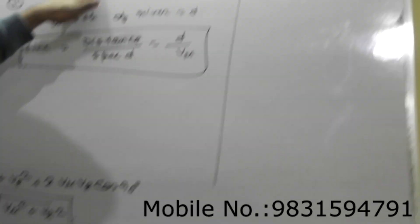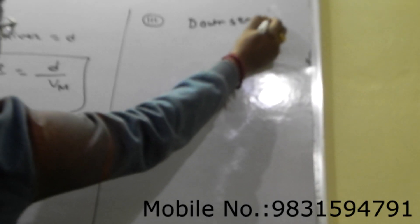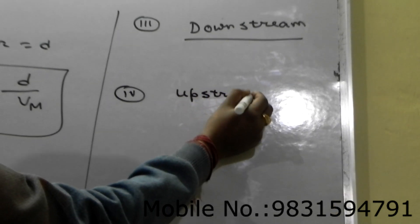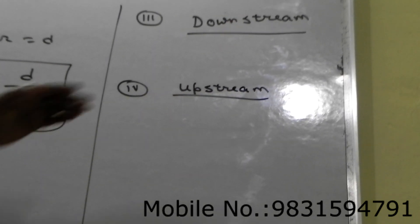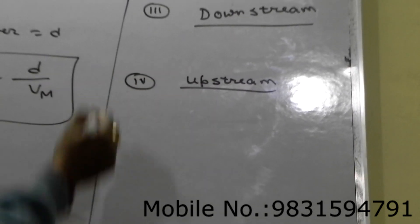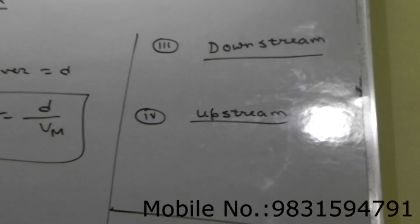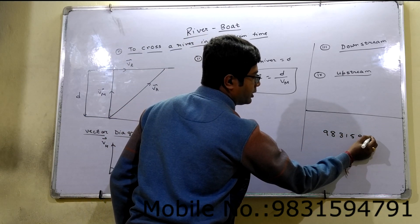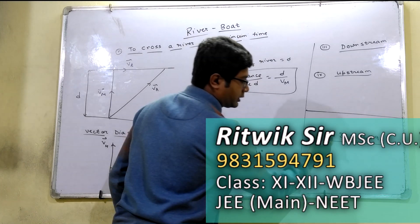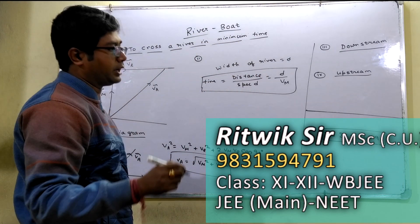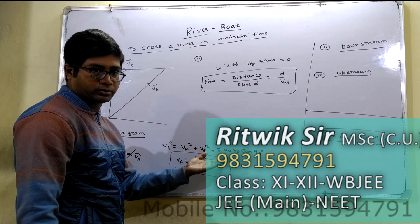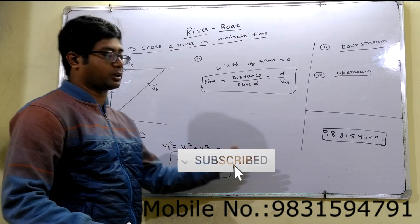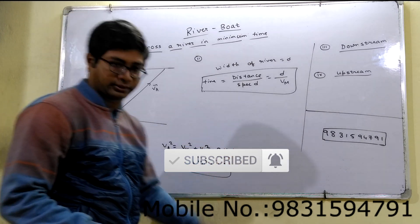And there are third and fourth cases: to cross the river being downstream and upstream. Downstream is along the stream, and upstream is opposite to stream. This will be discussed in class. Please follow my classes. My number is 9831-594-791. And there are three branches: Tollygunge, Keshtopur and Shyambazar. Please, if you want more, please join my classes. Thank you. And please subscribe and share this video if you like this. Thank you so much.